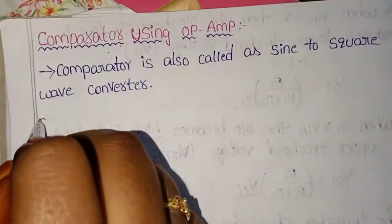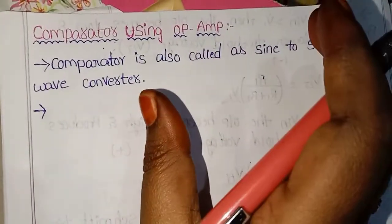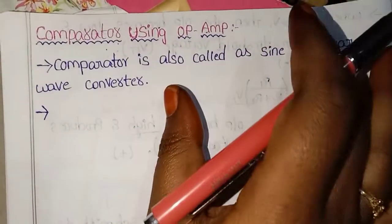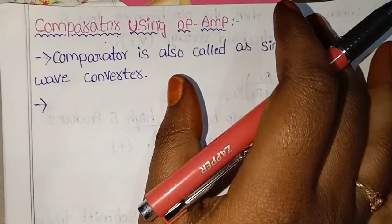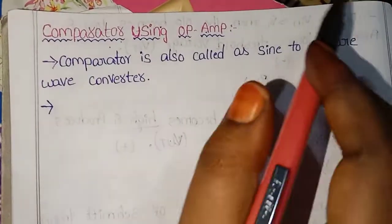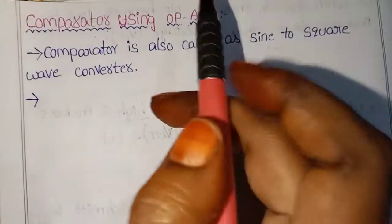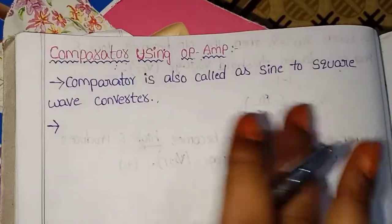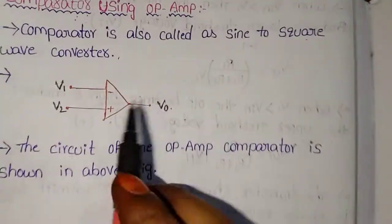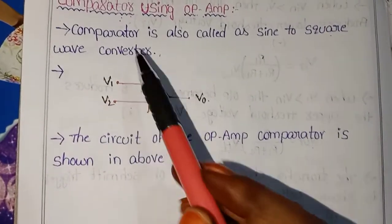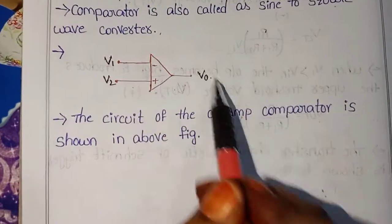The comparator is used with input signals and output. Here we are using an op-amp — the operational amplifier. It has two input terminals. The two inputs are compared to produce the output V0. The inputs are called V1 and V2, and the output is V0.